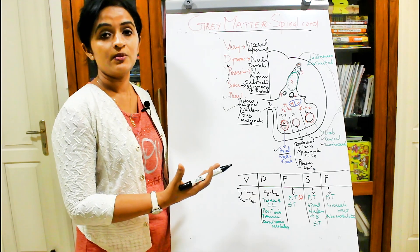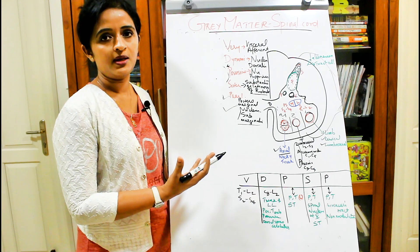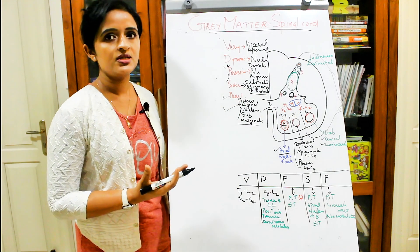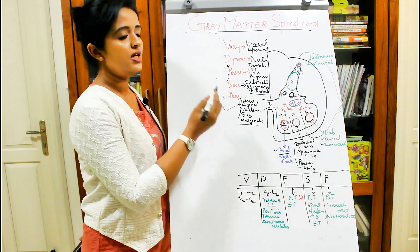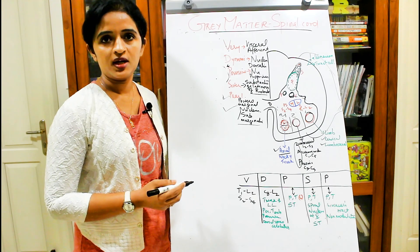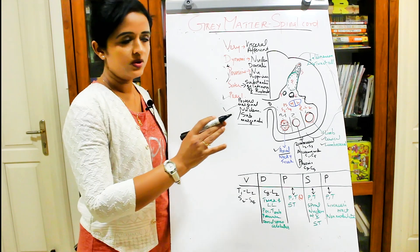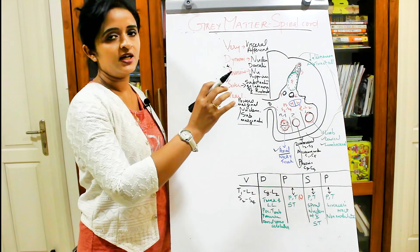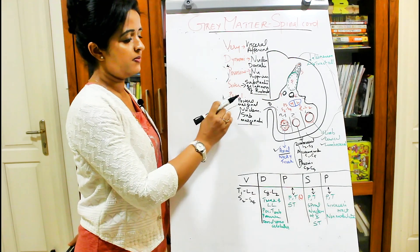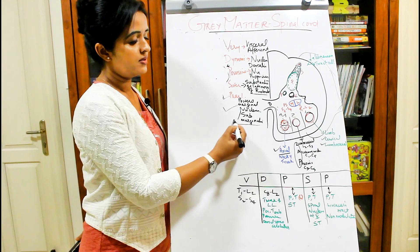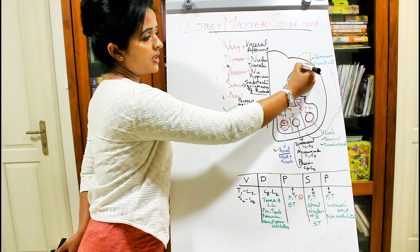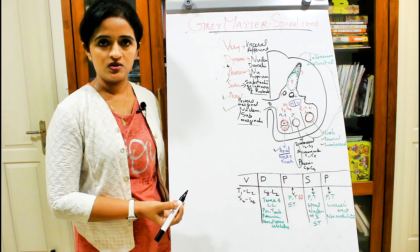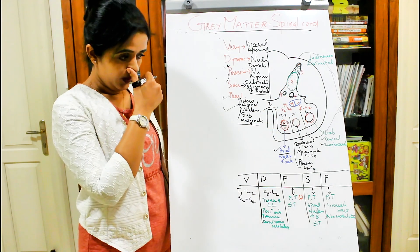The posteromarginal nucleus is usually not mentioned in many books when discussing the posterior horn of gray matter, but I would like to add it because when we talk about Rexed laminar architecture it will be easy to understand where it is located. In most books, substantia gelatinosa of Rolando is considered the apical portion of the posterior horn, but the posteromarginal nucleus — or substantia marginalis — is actually a thin rim over the substantia gelatinosa of Rolando.